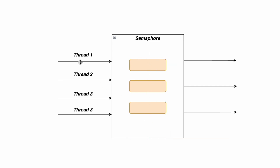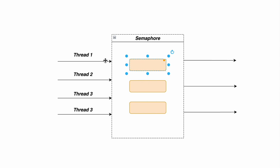To begin with, thread one wants to execute, so it calls acquire on the semaphore. The acquire method is like requesting a permit. Since we have three permits available, thread one is allowed and will execute and access the third-party service. Thread one says it wants one permit; the semaphore says it has three permits and gives one, so that permit is no longer available — leaving two permits. Once the permit is assigned to thread one, it goes ahead with its execution.